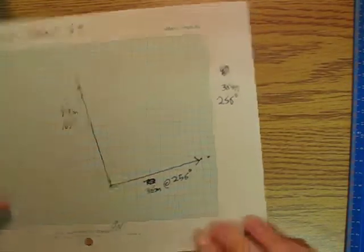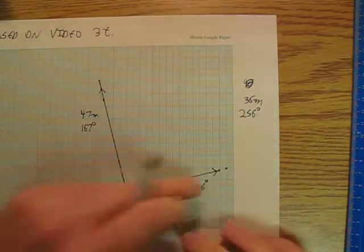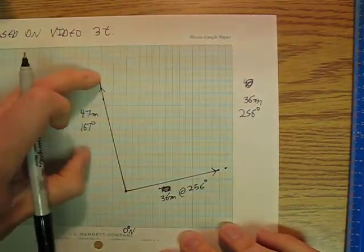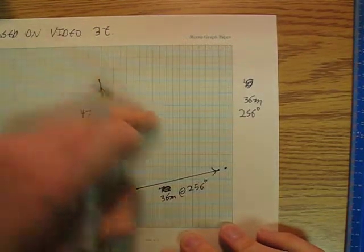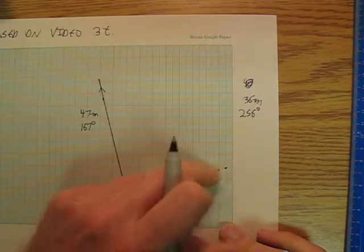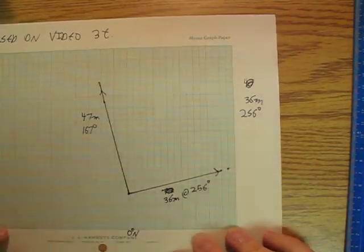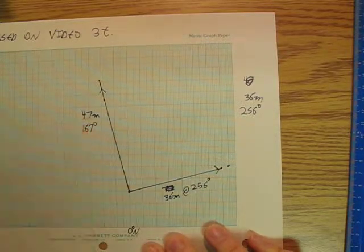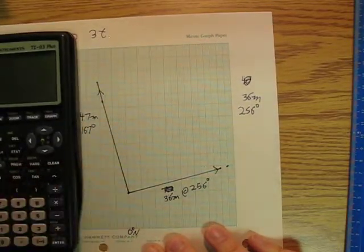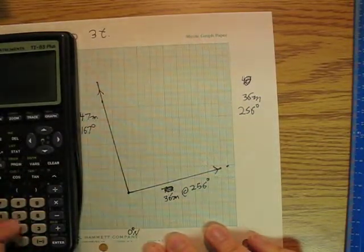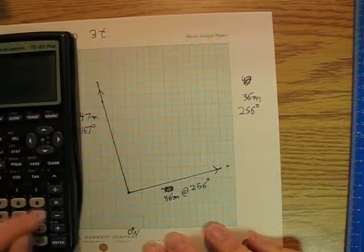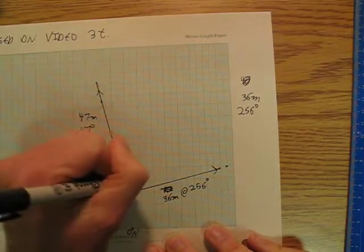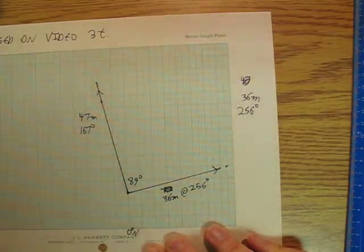So now the question is, if I'm standing at this corner post, what is the displacement of this post? Well, let's do a little bit of math here. So here, if we do 256 minus 167, I get 89 degrees. So that's 89 degrees.